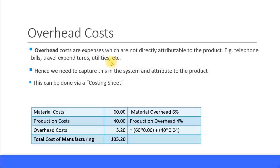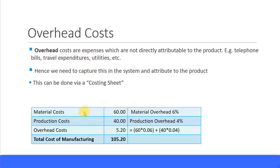Overhead costs are not directly attributable to production because the same electricity or water expenses can be attributed across multiple materials. For your finished goods, you cannot directly say how much electricity was used for a particular product. So if you have multiple products on your production line, you cannot directly attribute overhead costs. Hence, you have something called an overhead cost rate — you can put a percentage on top of your material costs and production costs and calculate that as overhead costs.